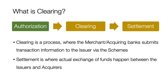Clearing is the step where the merchant submits the transaction information to the acquirer, who further submits it to the scheme. The scheme receives clearing files from all acquirers, sorts them, and creates an issuing file pertaining to that particular issuer based on the BIN. Since in clearing the actual transaction amounts are submitted by the merchant, fees like interchange and commission are calculated based on the final transaction amount, and those fees are also exchanged in this step.